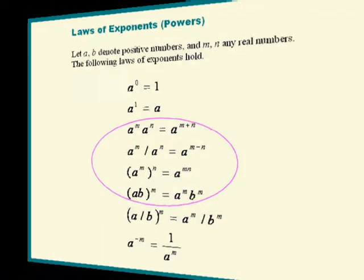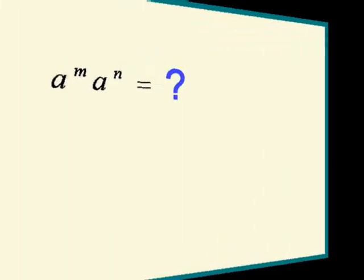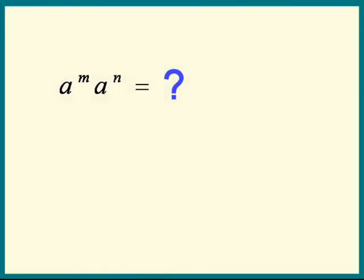What is a to the m times a to the n? Do we add or multiply the m and the n? Let's find out. Let's use lucky sevens: seven cubed times seven to the fifth.